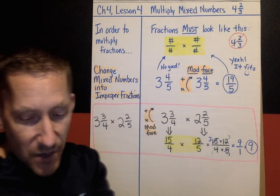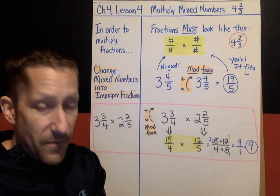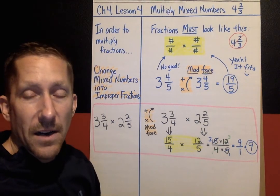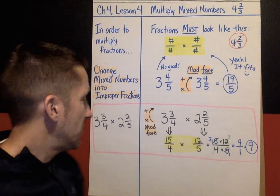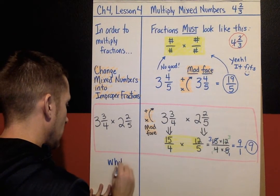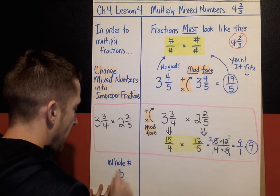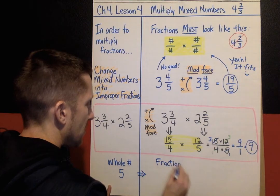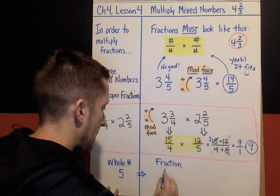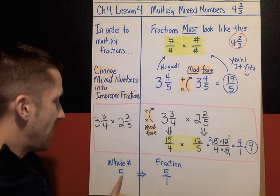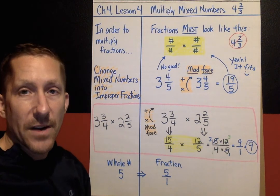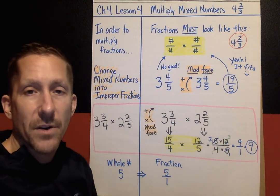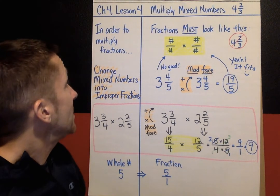I also want to remind you that if you have a whole number, you can change it into a fraction by putting that whole number over 1. For example, the whole number 5 is the same as 5 over 1. Any whole number is that whole number over 1 — that way it fits the number-over-number format.